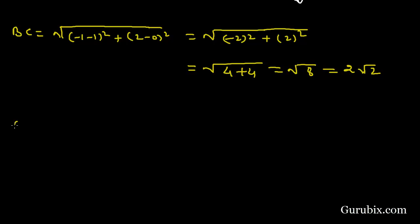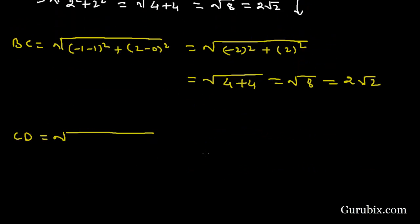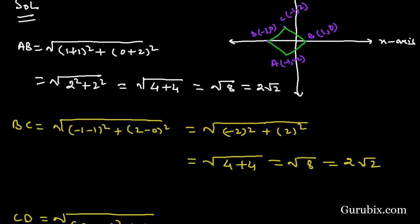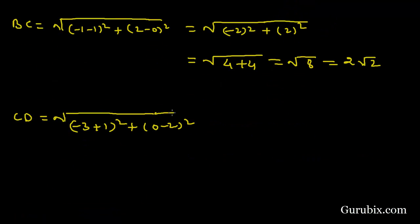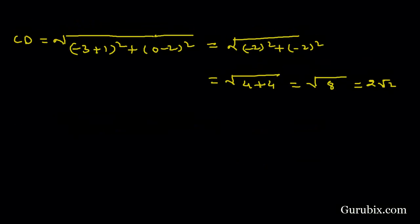Now we find the distance CD: it equals √((-3+1)² + (0-2)²) = √((-2)² + (-2)²) = √(4 + 4) = √8 = 2√2.